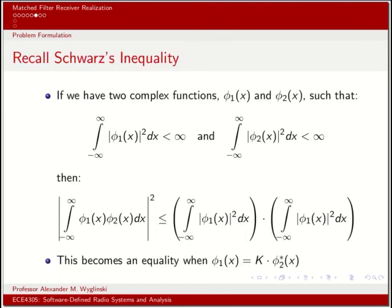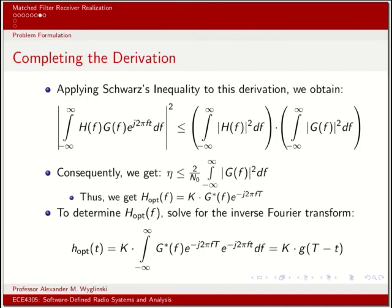We use something called Schwartz's inequality in order to get a closed form solution for this signal-to-noise ratio metric. If you have two complex functions φ₁(x) and φ₂(x), and they have integral representations and they're both bounded, less than infinity in both cases, then their product magnitude squared, this integral, will be less than or equal to the product of the individual integral expressions. This becomes equality when φ₁(x) equals k, some constant, multiplied by φ₂ conjugate, complex conjugate of x. If we use that in the previous expression for the numerator, we can decompose this big integral expression to the product of two integral expressions, and suppose we want to have equality.